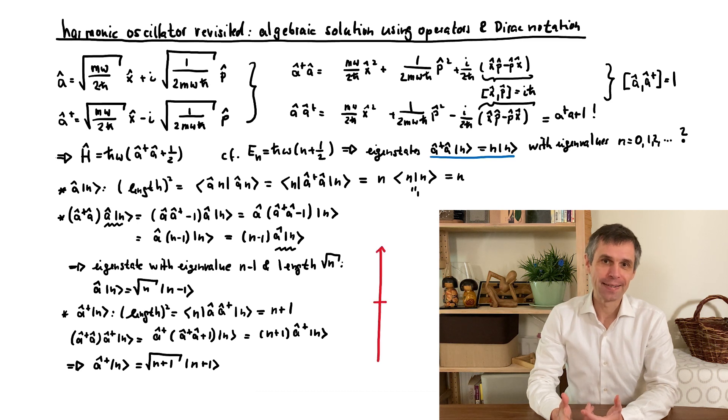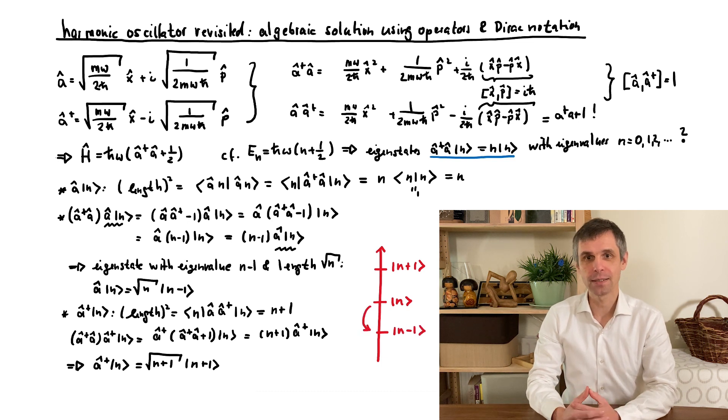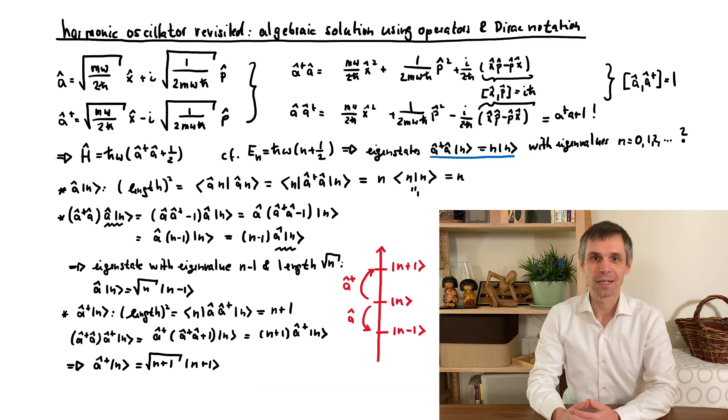So these operators A and A-dagger relate the different eigenstates to each other. And because you can think of the eigenvalues as steps on a ladder, they are also known as ladder operators.